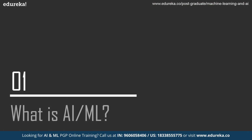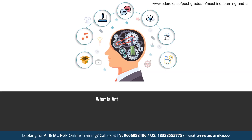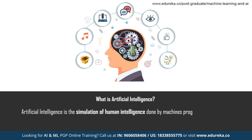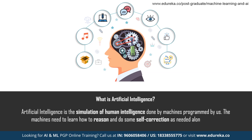Let us go ahead and take a look at what exactly is AI and machine learning. According to the Merriam-Webster dictionary, artificial intelligence is a branch of computer science dealing with the simulation of intelligent behavior in computers. AI is a technique that enables machines to mimic human behavior — the theory and development of computer systems able to perform tasks normally requiring human intelligence, such as visual perception, speech recognition, decision making, and translation between languages.